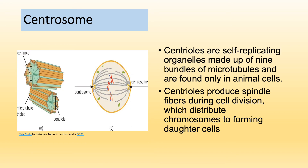The centrosome contains a pair of structures called centrioles, which are microtubule bundles. Centrioles are important because they move chromosomes to opposite ends of the cell during cell replication, termed mitosis. Neurons do not have centrioles, which is why they cannot replicate. Centrioles are self-replicating organelles made up of nine bundles of microtubules and are found only in animal cells. They produce spindle fibers during cell division, which distribute chromosomes to the forming daughter cells.